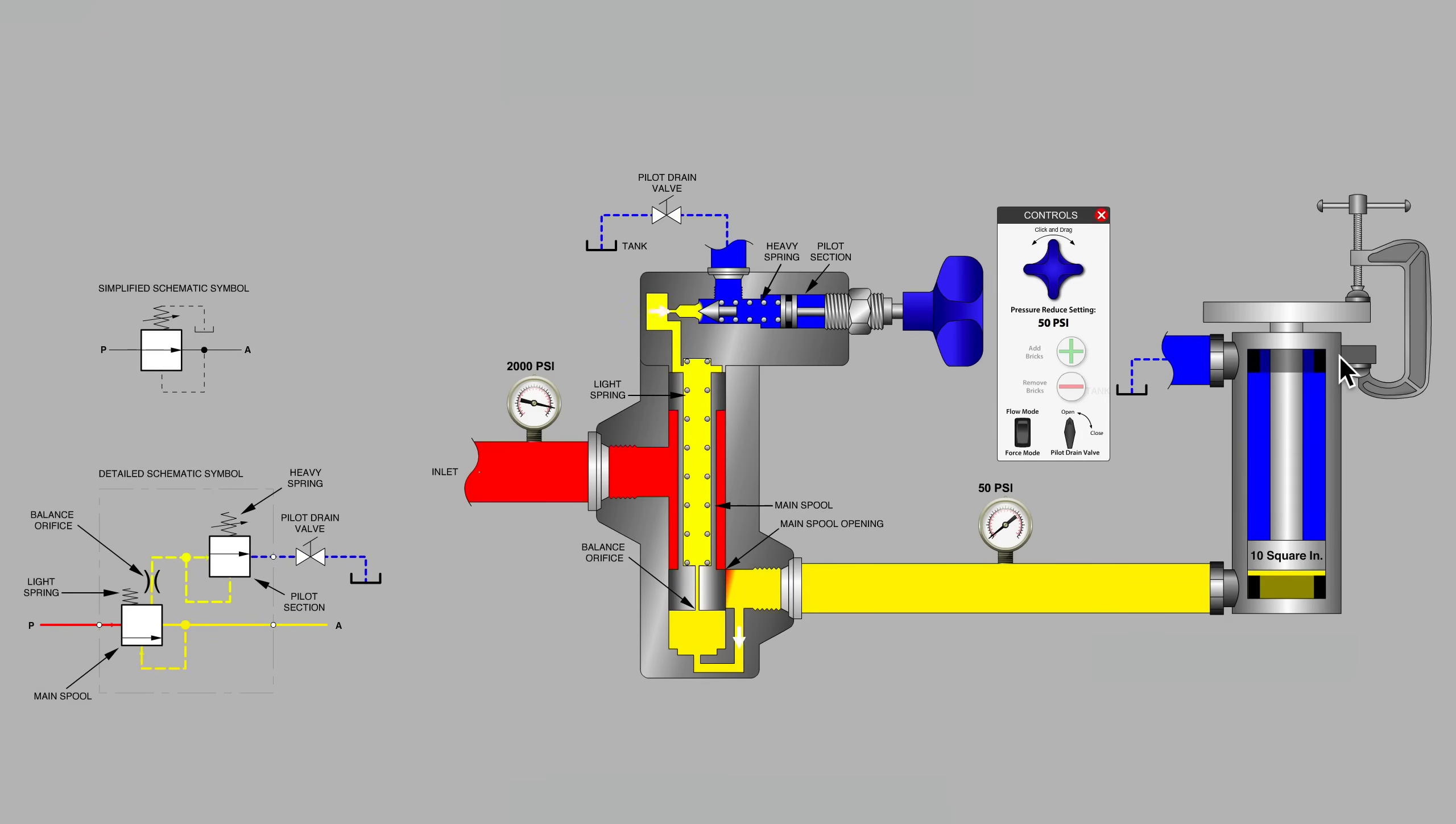While many pressure-reducing valves use a normally open or normally passing symbol, once active, the valve has to spend a fair amount of time in the closed position.